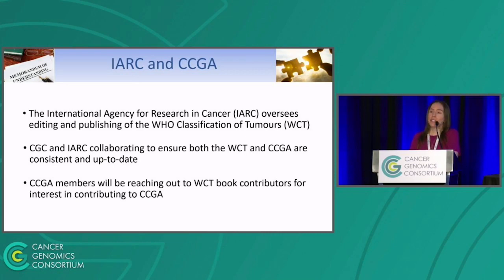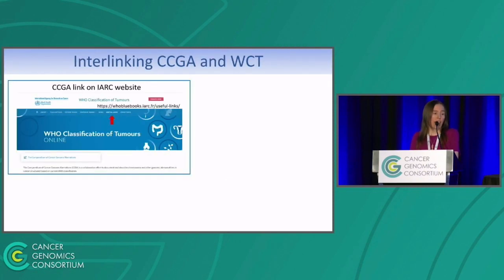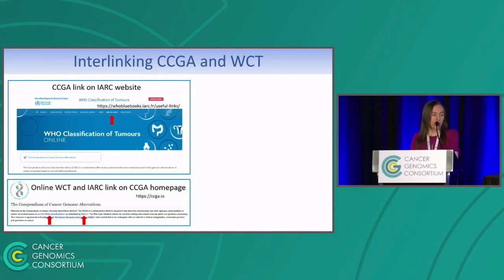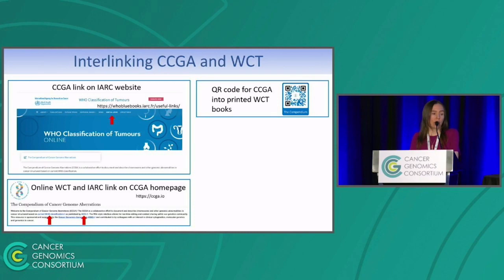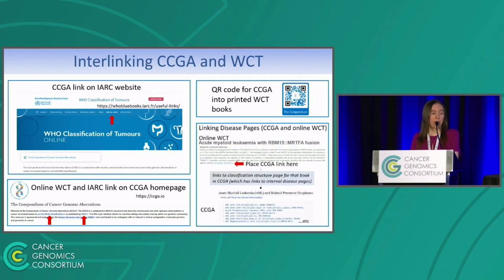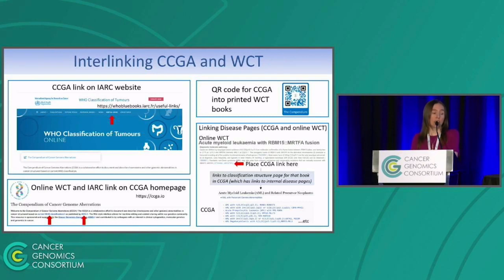As you heard from Dr. Lokuhedi, CGC and IARC are collaborating, and we will actually be reaching out to contributors to the books to help contribute to CCGA. The interlinking is indeed happening — you can go to their site and find a link to CCGA under the useful links content. We've also linked to both the online version of the books and the IARC website. QR codes are planned to be put in the printed version of their books for CCGA, and we're going to be linking the disease pages in the online book, placing a link to the related book tree structure on our site so that people can find the individual page of the disease they want on the CCGA site.